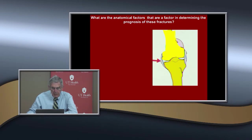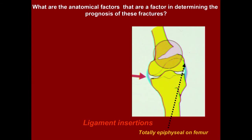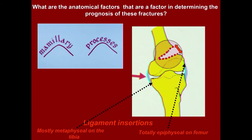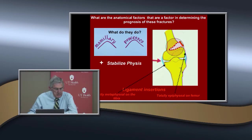What anatomical factors determine the prognosis? With a valgus stress, the physis opens up. The ligament insertions on the femur are totally epiphyseal, while on the tibia they're mostly metaphyseal — so the tibia is protected because forces apply to the metaphysis rather than the physis. Mammillary processes are extensions of the physis into the metaphysis that add stability and stabilize the physis against tension stresses.